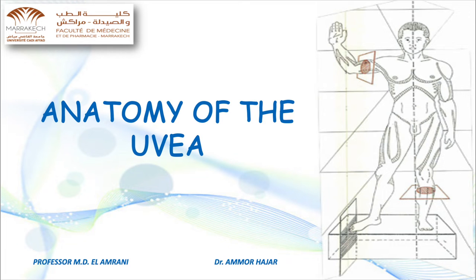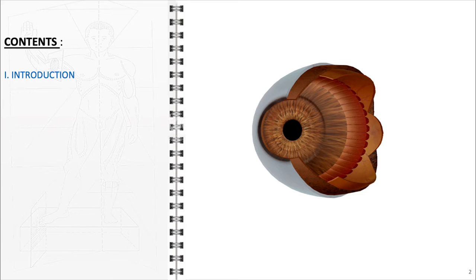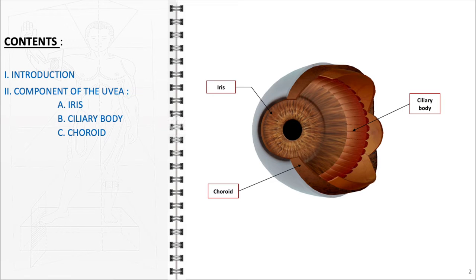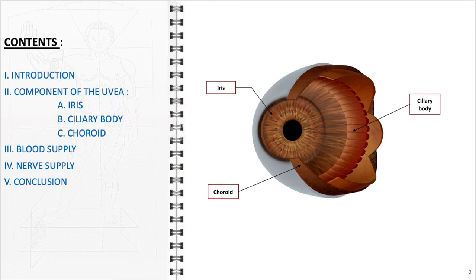In this video, we will discuss the detailed anatomy of the uvea. Starting with an introduction, we will proceed to describe the various components of the uvea, including the iris, ciliary body, and choroid. Before we conclude, we will also explore the blood and nerve supply to these areas.